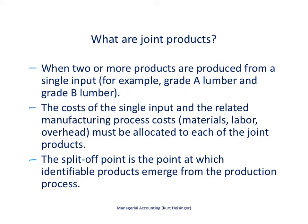We should first start by talking about what we mean when we use the term joint products. When two or more products are produced from a single input, we have joint products. An example of this is if we produce different types of lumber from one tree.